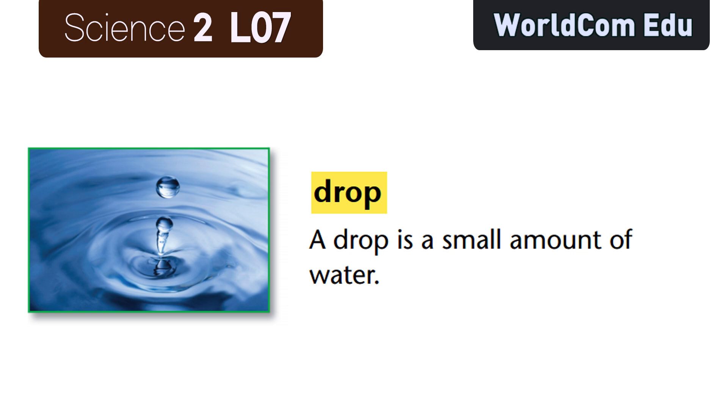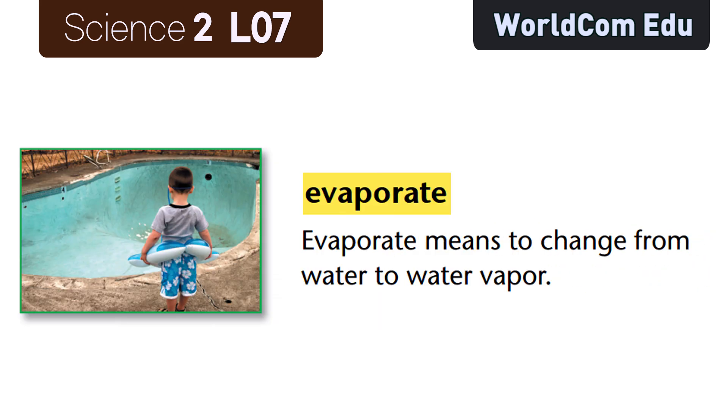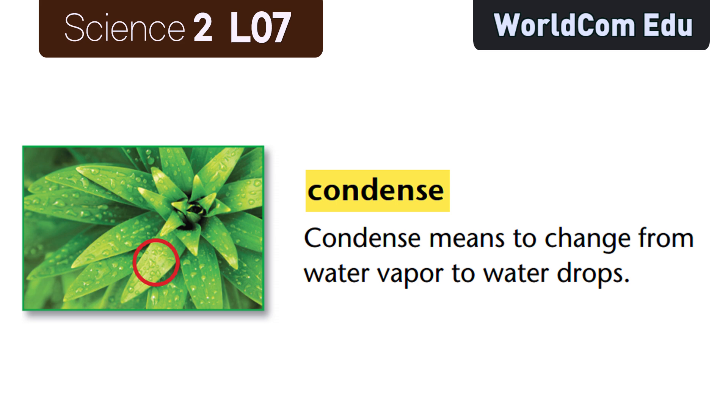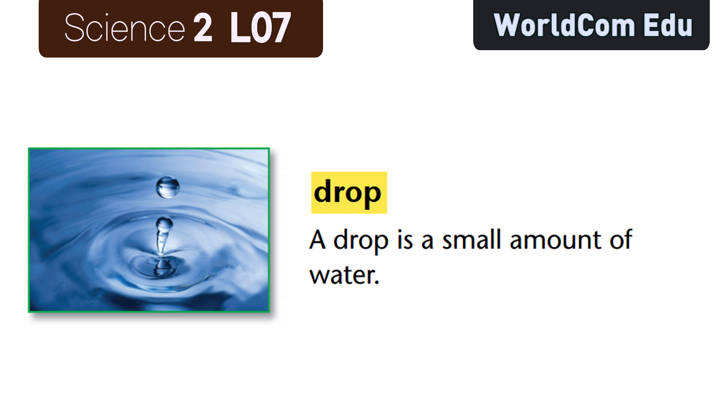Lesson seven. Clouds and rain. Cycle: a cycle is a series of events being repeated many times. Cloud: a cloud is many drops of water that are together in the sky. Evaporate: evaporate means to change from water to water vapor. Condense: condense means to change from water vapor to water drops. Water vapor: water vapor is the water that goes up into the air as a gas. Drop: a drop is a small amount of water.